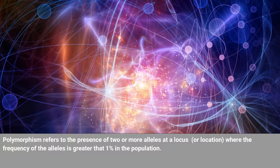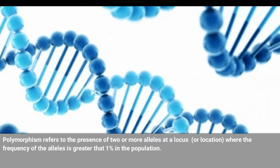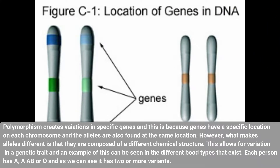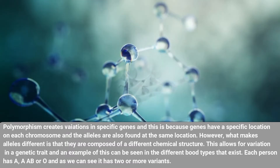Polymorphism refers to variations in specific genes. It refers to the presence of two or more alleles at a locus, or location, where the frequency of the alleles is greater than one percent in the population. Polymorphism creates variation in specific genes because genes have a specific location on each chromosome, and the alleles are also found at the same location. However, what makes alleles different is that they are composed of a different chemical structure, which allows for variation in a genetic trait.